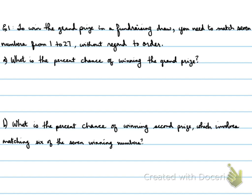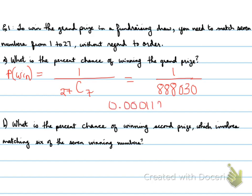So, in part A, we want to win the grand prize. The probability of winning the grand prize is you have one possible answer over 27 choose 7. So, over the 27 numbers, we can choose any 7 numbers. But your chance of getting that grand prize is if the right combination that you've picked is chosen. So, that's 1 over 27 choose 7. And that gives you 1 over 888,030.